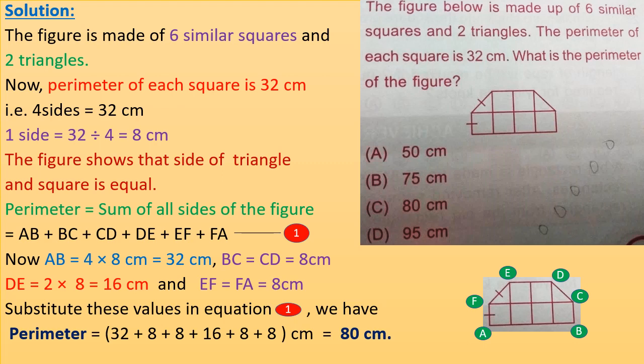The figure shows that the sides of the triangles and squares are equal — see the equality marks in the figure. The perimeter equals the sum of all sides of the figure, which is AB plus BC plus CD plus DE plus EF plus FA. This is our equation 1; we will now calculate each side.